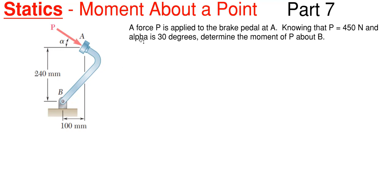So what we have going on here is this picture on the left, and we have a force P that is applied to this brake pedal at A as shown. Knowing that this force P is 450 newtons and that this alpha angle is 30 degrees off the horizontal here, we need to determine the moment down here at B.